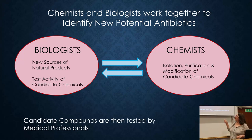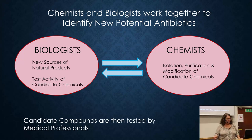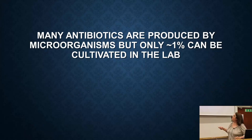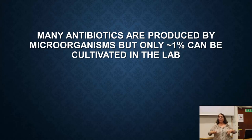You need biologists who will find new sources of antibiotics and get initial hints that something might work, which are then given to chemists who can modify these compounds and make them work better. They then go back to the biologists who continue to test them, back and forth, until you have a very good candidate, which is then passed on to medical professionals for animal testing and further human testing. Many antibiotics are produced by microorganisms.